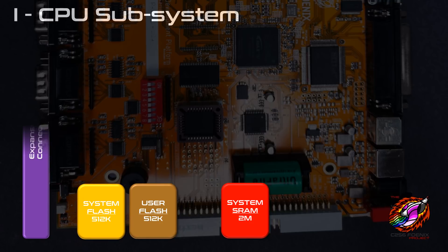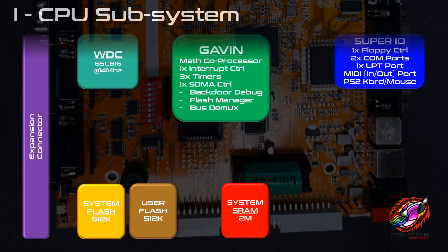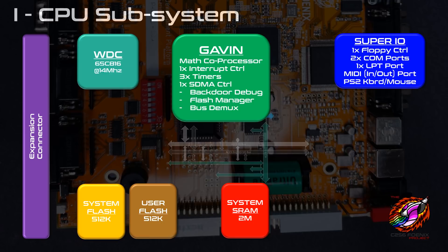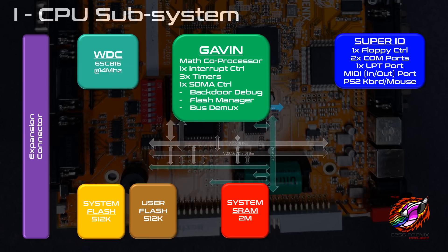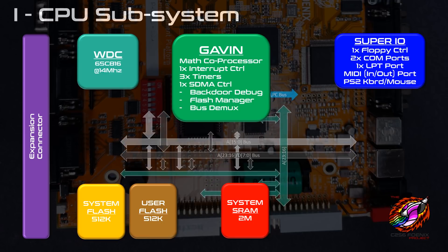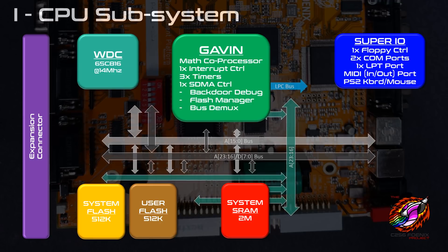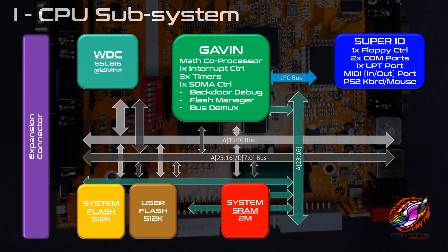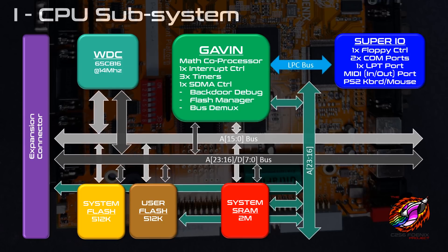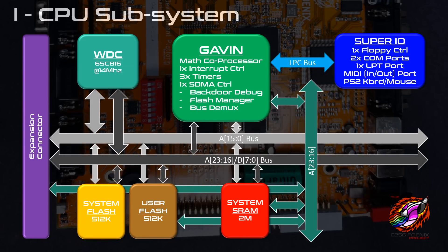Within the system, there are three subsystems. The main system, which includes the CPU and Gavin — the system manager — which has all these different blocks: the system RAM, the system flash, user flash, system RAM of either 2MB or 4MB to be decided, the expansion connector, and the SuperIO. This is one block that is pretty self-sustaining.